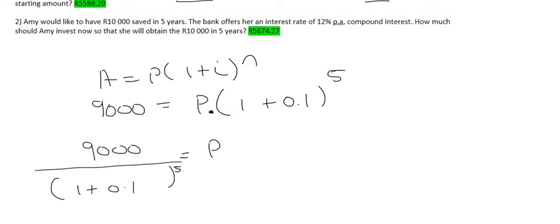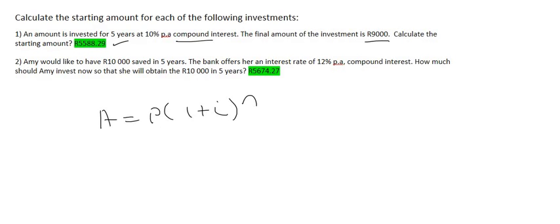Type all of that in the calculator, just like that. And what you'll find is a P value of 5,588.29. Moving on to number 2.